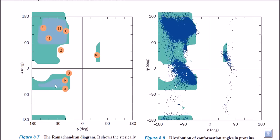Looking at the second quadrant — meaning negative values below minus 90 degrees for psi and minus 90 to minus 80 for phi — if we have such torsional angles for a peptide chain, it is probable that they will form alpha helices instead of beta sheets. The Ramachandran plot helps us know what type of protein structure those peptide bonds are going to achieve, and whether those protein structures are being favored or not.